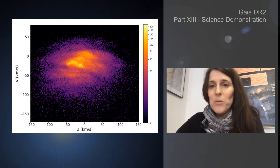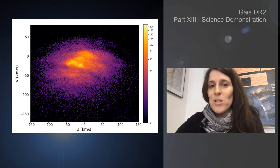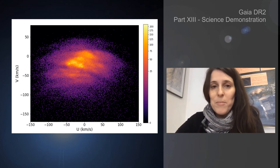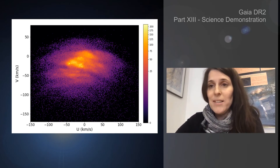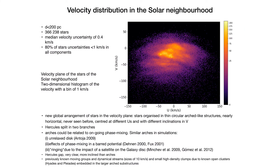Another very nice result we show in the paper is related to the stars in the solar neighborhood. One might think there was nothing new to discover here because the solar neighborhood has been covered by previous surveys. But with Gaia we have many more stars in this region with unprecedented accuracy, and we have seen that there are new things to discover. I'm showing the velocity distribution of these very nearby stars — closer than 200 parsecs — with median velocity uncertainties of 0.4 kilometers per second, and 80% of stars with uncertainties smaller than one kilometer per second. We observe a new global arrangement of stars in velocity space organized in thin arch-like structures, nearly horizontal, that have never been seen before.